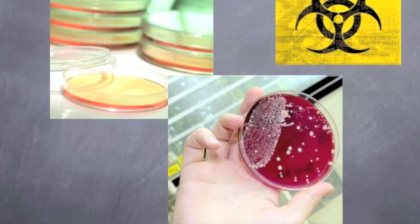Any organism generated using these techniques is considered a genetically modified organism. The first organisms genetically engineered were bacteria in 1973, and mice in 1974. Insulin-producing bacteria were commercialized in 1982, and genetically modified food has been sold since 1994. The most common form of genetic engineering involves insertion of new genetic material at an unspecified location in the host genome, accomplished by isolating and copying the genetic material of interest and generating a construct containing all the genetic elements for correct expression, then inserting it into the host organism.